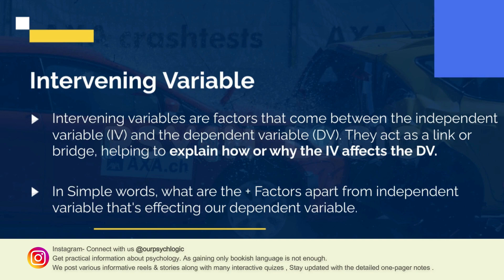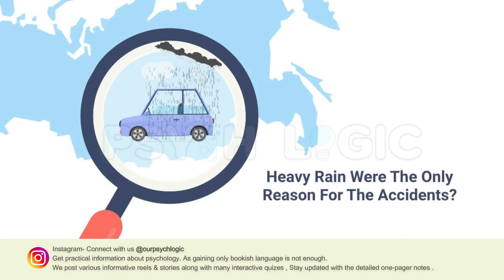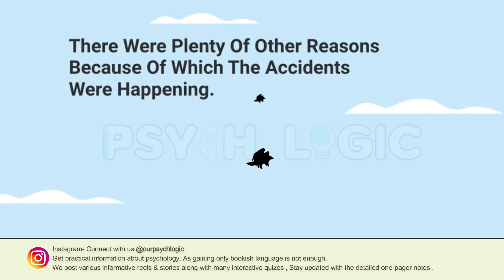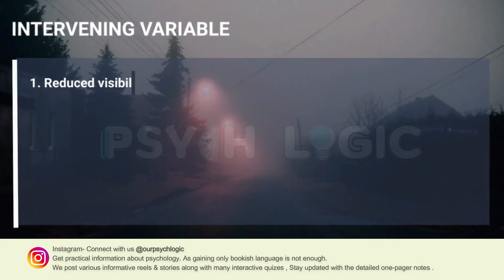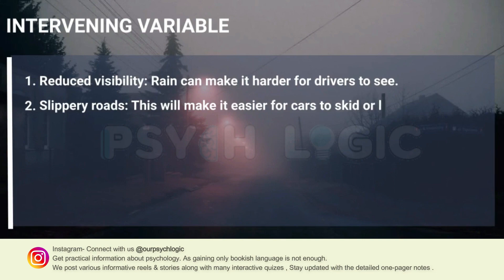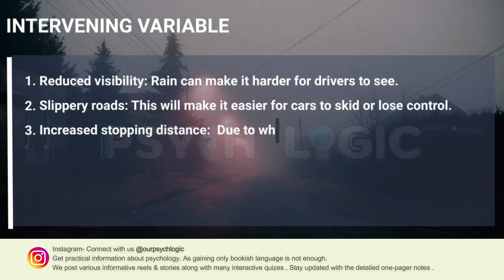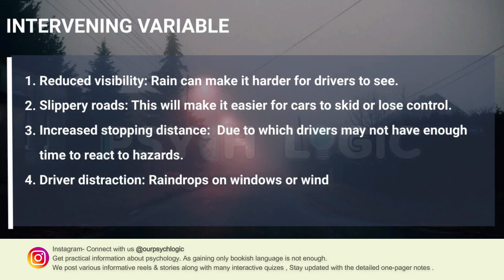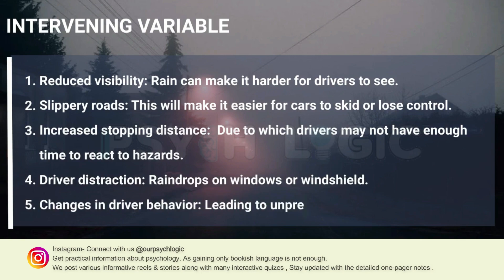But how? In the last example, the independent variable was heavy rain and the dependent variable was number of accidents. Now, are only heavy rain affecting the number of accidents? No — because in rainy season, there are many factors we can stipulate are increasing accidents. Like reduced visibility: rain can make it harder for drivers to see, increasing the risk of accidents. That can be an intervening variable. Slippery roads increase stopping distance — it takes longer for cars to stop on wet roads, so drivers may not have enough time to react to hazards.